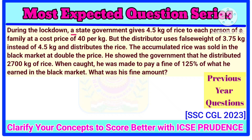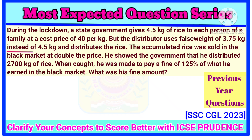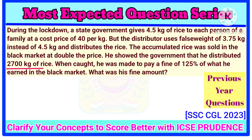The government decided to give 4.5 kg of rice to each person. The cost of wages is 40 rupees per kg. But the distributor uses a false weight of 3.75 kg instead of 4.5 kg and distributes the rice. The accumulated rice was sold in the black market at double the price. He showed the government that he distributed 2,700 kg of rice. When caught, he was made to pay a fine of 125% of what he earned in the black market. What was his fine amount?